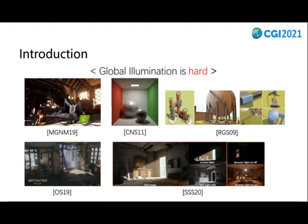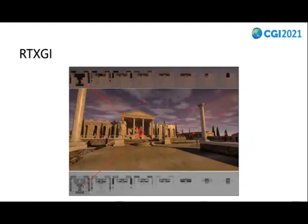We will first briefly introduce several global illumination solutions in recent years. First, RTXGI. RTXGI saves the scene radiance at different points into a set of probes. By introducing RTX hardware acceleration, it makes real-time probe update using ray tracing possible, leading to fully dynamic global illumination. However, this method relies on proprietary hardware acceleration and cannot be used on universal platforms.